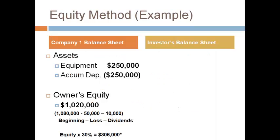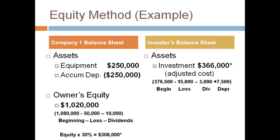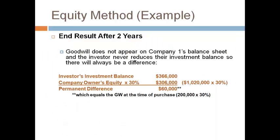The investee reports a lower net asset and a lower owner's equity on their balance sheet — the loss and the dividend both decrease their owner's equity. The investment account also changed to reflect the dividend, the loss, and the investor's share of the difference in depreciation on the equipment. The investment is reported on the balance sheet at an adjusted cost, not at fair value. After two years, the investment balance represents 30% ownership of the investee's owner's equity, with the exception of the amount paid for goodwill, which is never adjusted.